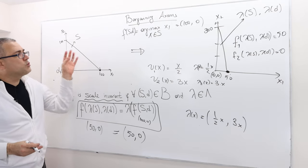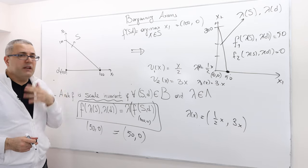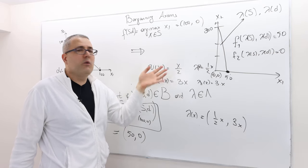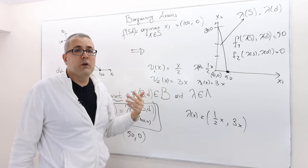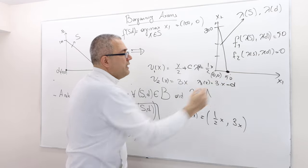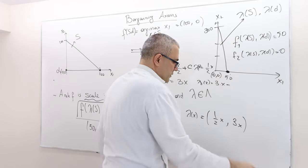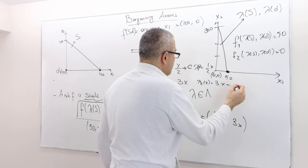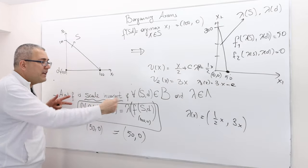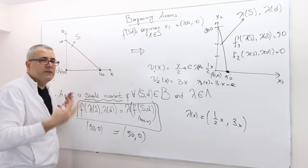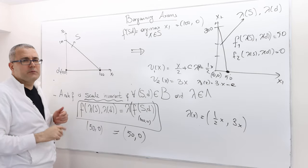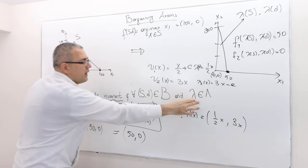But remember, this is just one transformation. There are infinitely many transformations — why did I scale one down and the other up? What if I scale both up, or both down? Or add some constant here and subtract some number there? The scale invariance has to hold for any positive affine transformation and for any bargaining problem. Here we used just one bargaining problem and one transformation, but the axiom requires it to hold universally.